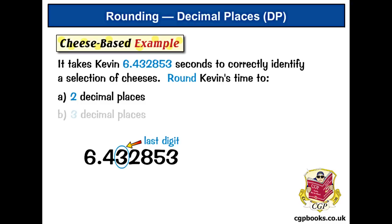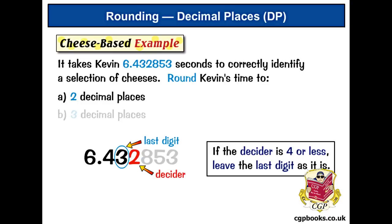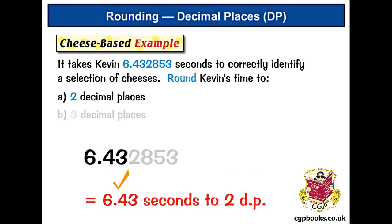And the decider is 2. We can ignore everything else to the right. Remember, the decider tells us whether to round up or not. When it's 4 or less, we leave the last digit as it is — so we keep the 3. And that means our answer is 6.43 seconds, to 2 decimal places, or d.p. for short.